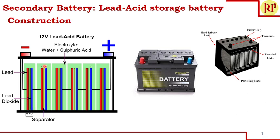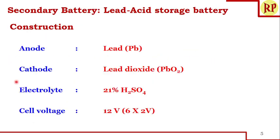This is the construction of our battery, and the commercial batteries look this way — the same thing is represented here. Anode is lead, cathode is lead-dioxide, and the electrolyte is 21% sulfuric acid. Cell voltage is 12 volts, that is 6 cells × 2 volts.